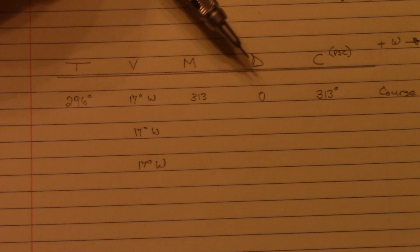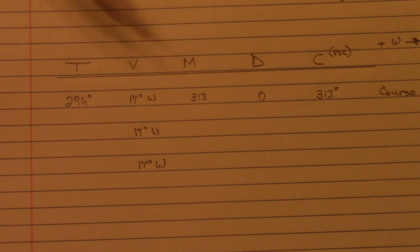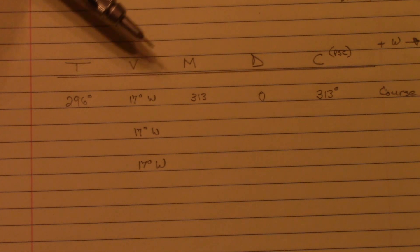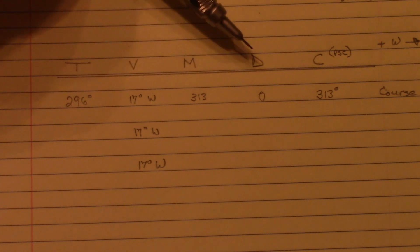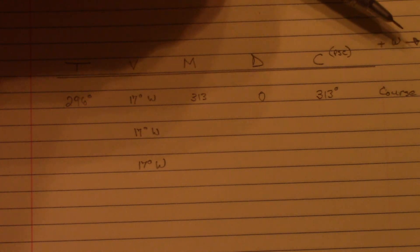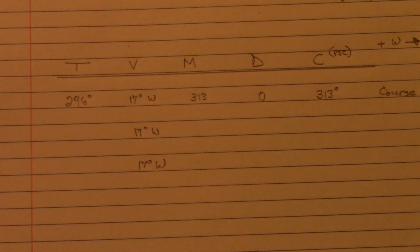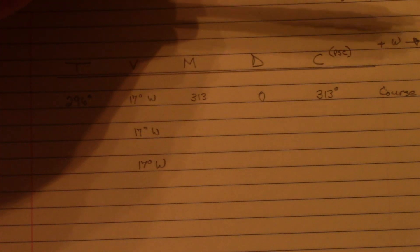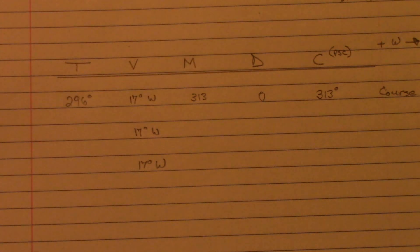There are several variations of how to remember the compass correction process. The one I learned is: True Virgins Make Dull Companions, Add Whiskey. Anytime you're moving from left to right you would add westerly variation.